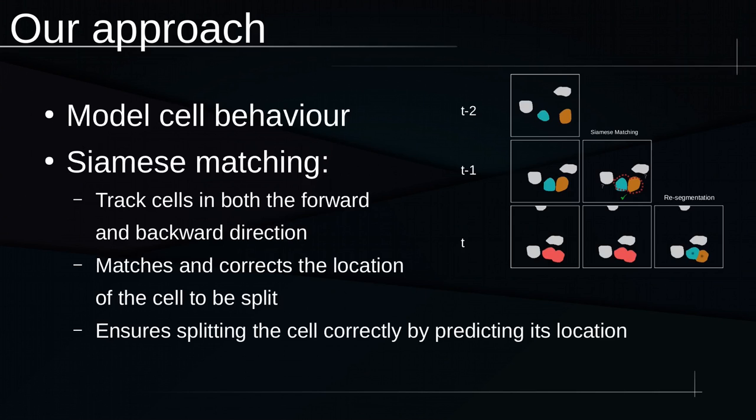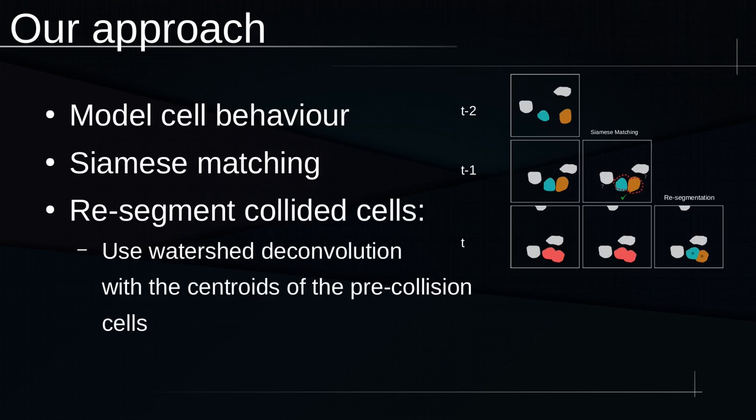The core essence of our algorithm is applying Siamese margin to the one cell that is segmented incorrectly to predict the correct location in the previous or next frame and correctly identify the two cells that combined into one. Using those two cells, we use their centroids to apply the watershed deconvolution to correct the mistake.